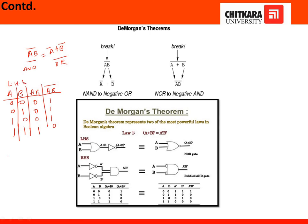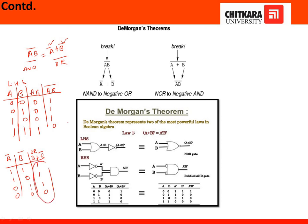Now for the right-hand side. I have A and B. Next, I take A bar and B bar — the complement of each input. The complement of A gives: 1, 1, 0, 0. The complement of B gives: 1, 0, 1, 0. Now I OR them — add both bars together: 1 plus 1 is 1; 1 plus 0 is 1; 0 plus 1 is 1; 0 plus 0 is 0. Comparing this result with the left-hand side, both provide the same output. This analysis shows that we can write A B whole bar as A bar plus B bar — the output is unaffected.